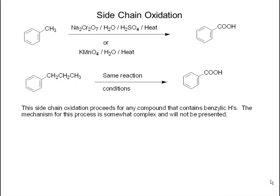In the first case, we're going to take the simple molecule toluene and treat it with a strong oxidant — either a chromium-6 oxidant or potassium permanganate. Under these conditions, you can completely oxidize toluene all the way to benzoic acid.